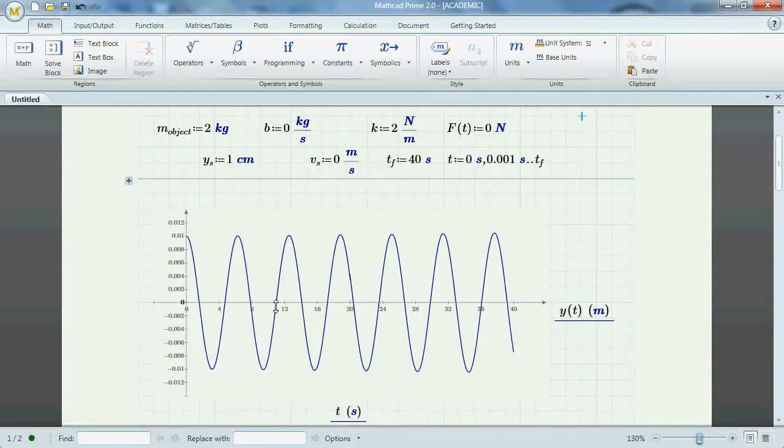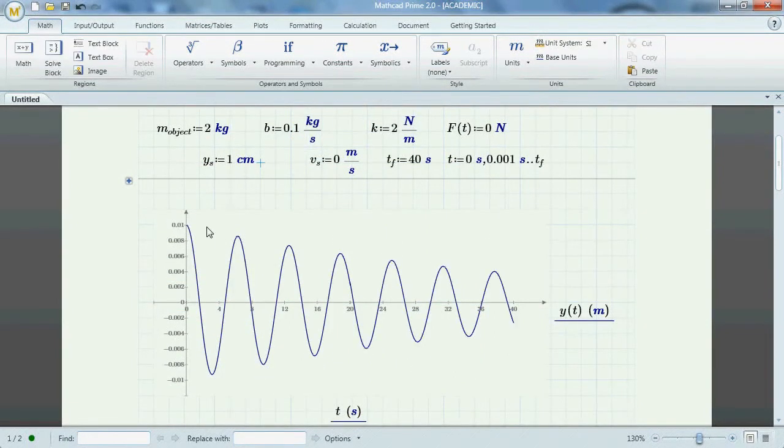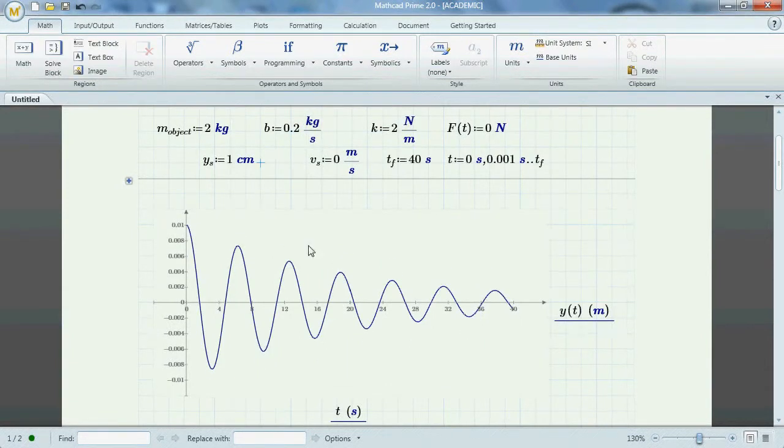Let's look at what happens as we change values. Here we have b equal to 0, so we have this oscillating system, an undamped system. Let's start to increase our b value. Now you notice that it's starting to decrease in amplitude as time goes on. The more we increase our b value, the faster it decays and goes away.